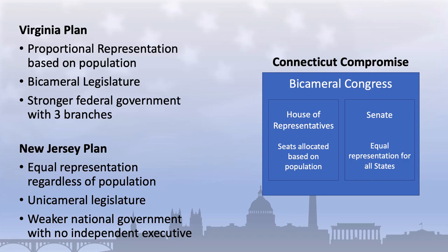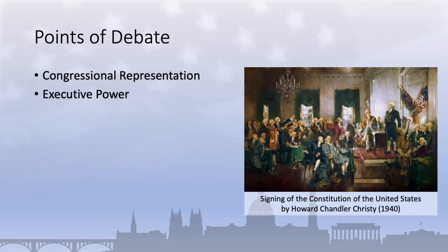Originally, the larger states opposed the compromise, fearing the Senate would create the same kind of political stagnation and feckless national government that plagued the country under the Articles of Confederation. It was not until mid-July, nearly two months after the convention convened, that North Carolina switched its vote and came out in support of the compromise. Eventually, the other states came around and the Connecticut Compromise was adopted. But remember that this was just the first of a series of debates at the convention, albeit the most contentious.